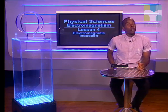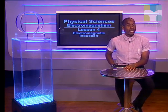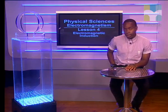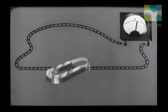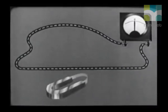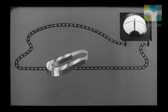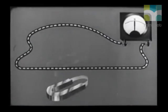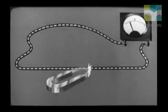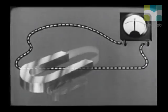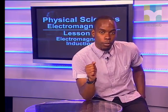Hello Grade 11s, we will investigate electromagnetic induction today. We know that when there is a flow of charge in a wire, a magnetic field forms around the wire. Today, we will investigate to see if the opposite is possible — will a magnetic field be able to produce a current? Before we go any further, let's talk about some terminology.